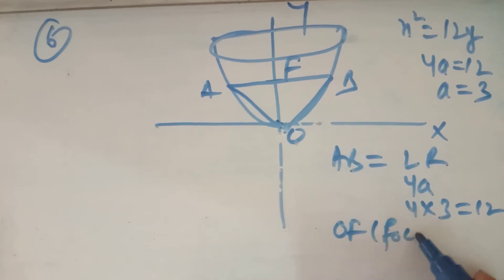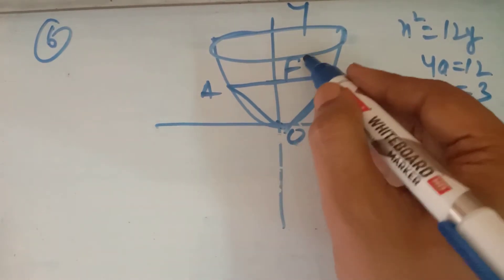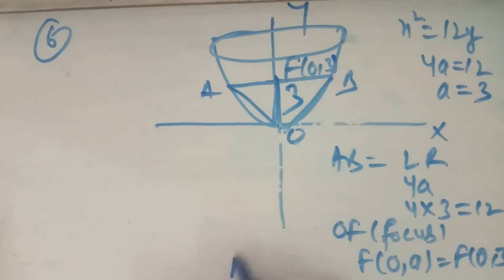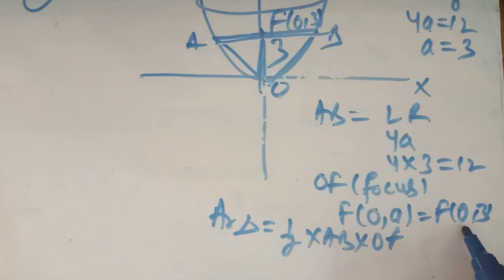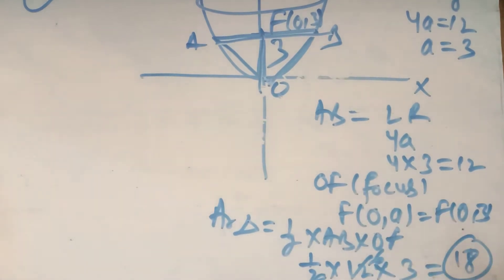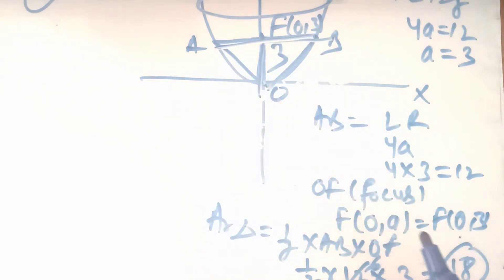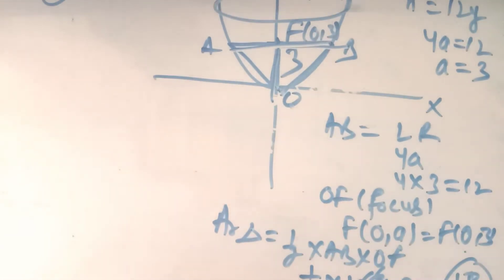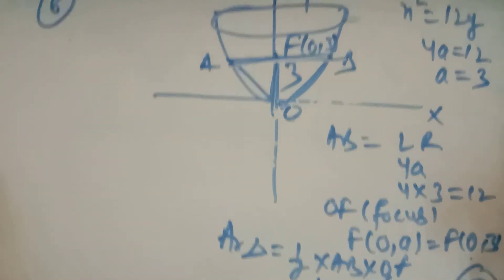The focus coordinates for a vertical parabola are (0, A) = (0, 3). So this distance OF = 3 and the base (latus rectum) = 12. Area of triangle = ½ × base × height = ½ × 12 × 3 = 18 square units. This is the area of the triangle whose one vertex lies on the vertex of the parabola and one side lies on the latus rectum of the given parabola.